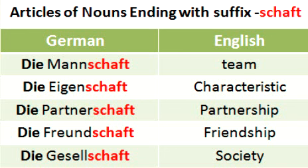Next is 'Eigenschaft,' which means 'property' or 'characteristic.' This noun again has the ending '-schaft,' therefore it is a feminine noun and takes the article 'die.'